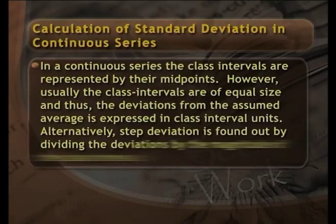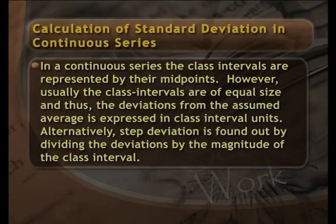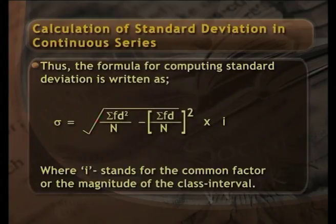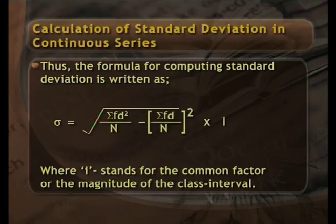Calculation of standard deviation in a continuous series. In a continuous series, the class intervals are represented by their midpoints. Usually the class intervals are of equal size, so the deviations from the assumed average are expressed in class interval units. Step deviation is found by dividing the deviations by the magnitude of the class intervals. Where I stands for the common factor or magnitude of class interval. Table 6 presents weekly family income of 8 respondents in rupees, with the second column giving weekly income in class intervals and the third giving number of families.